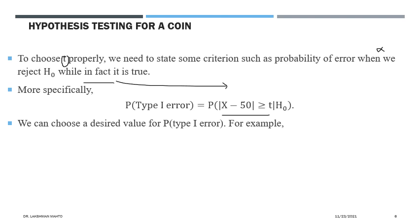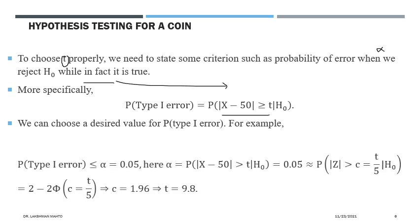We choose a desired value of the probability of Type I error, which we call the significance level. For example, we might want a test for which the significance level — the probability of Type I error — is 0.05. This is given to you: if the threshold t is not given, this significance level will be given. So alpha is the probability that X is more than t away from 50, given that H0 is true. Note that n equals 100 here.